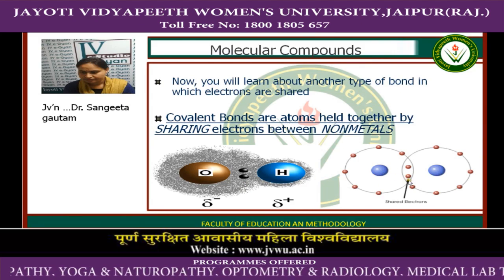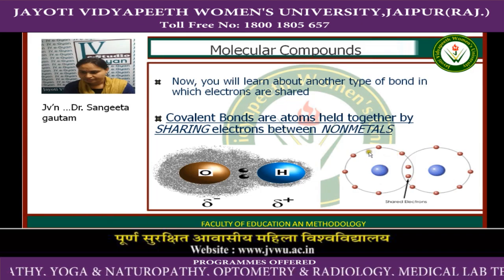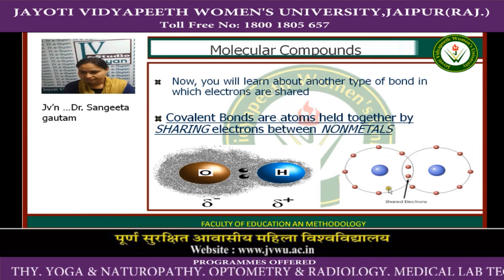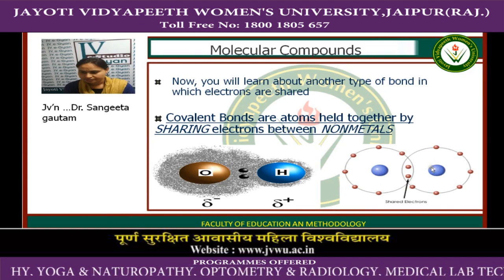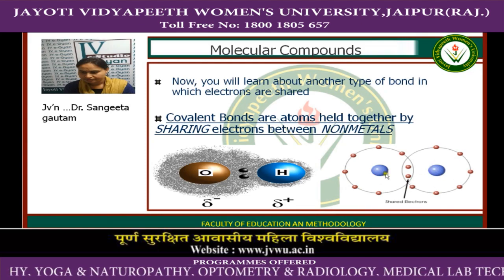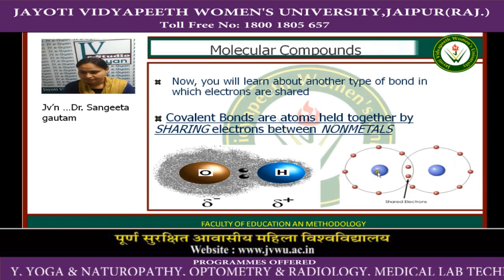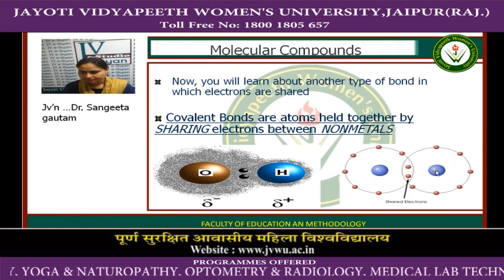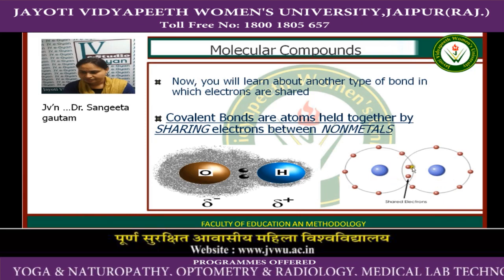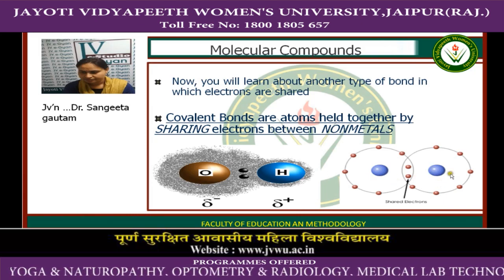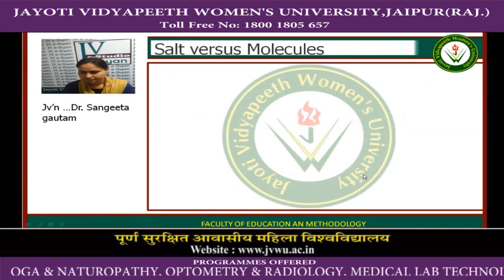You can also see covalent bonding in another picture where one atom has seven electrons in its outermost orbital and the other atom also has seven electrons in their outermost orbital. To fulfill their octet, they share one electron from each atom, and their octet is fulfilled by the sharing of these electrons.